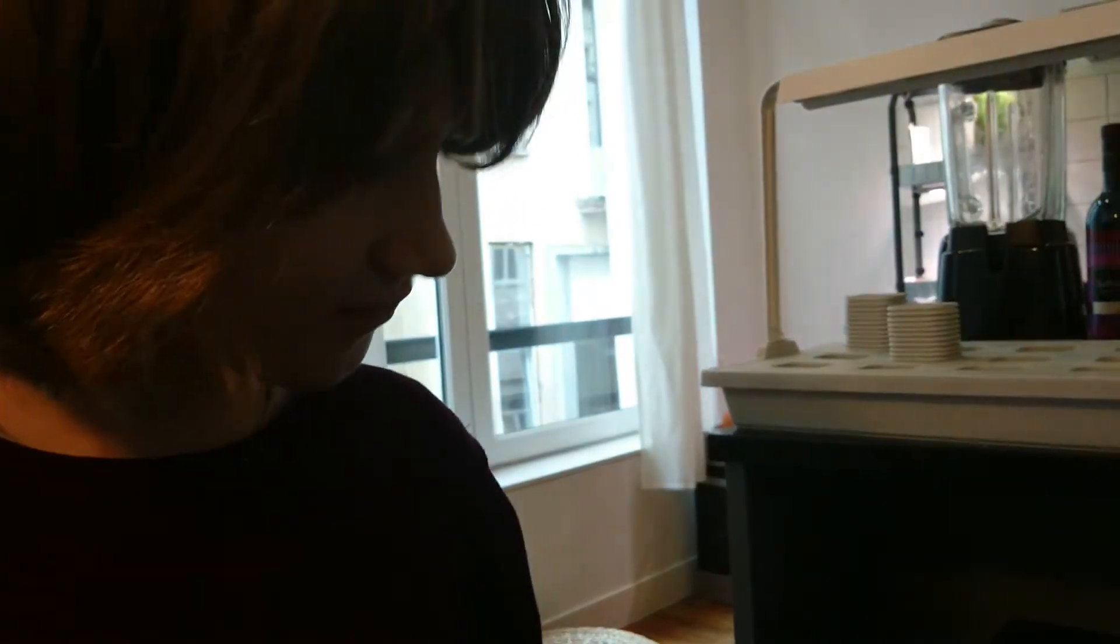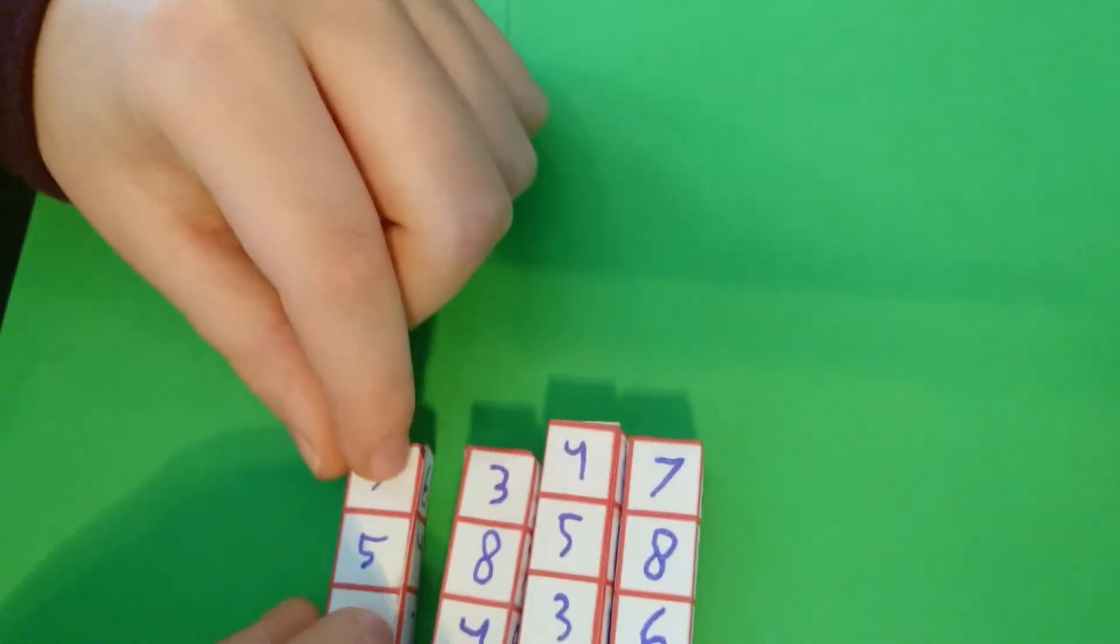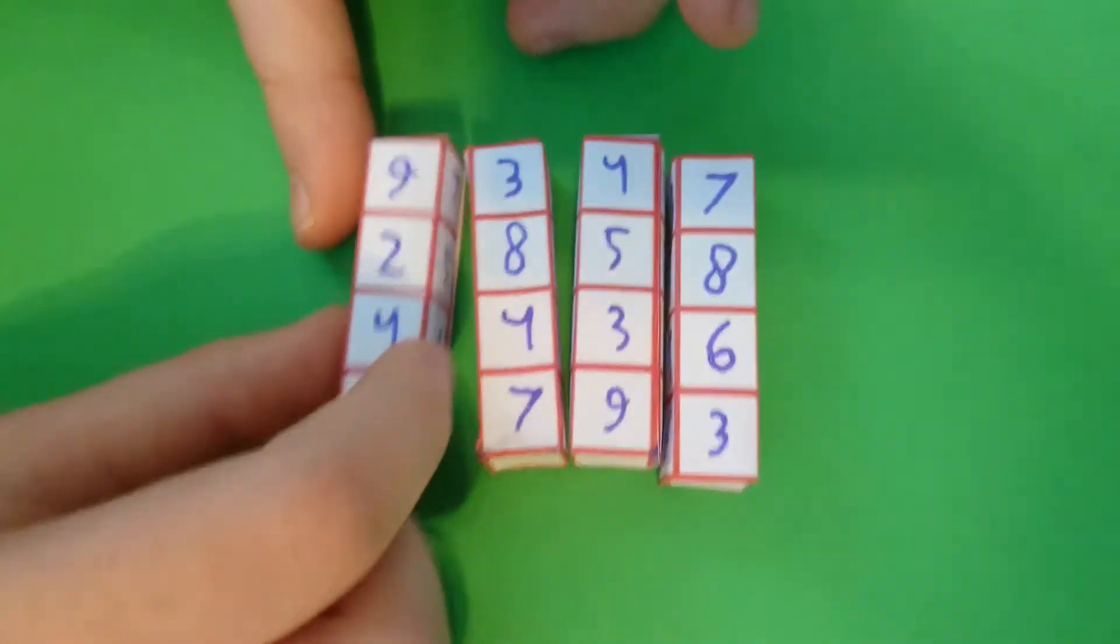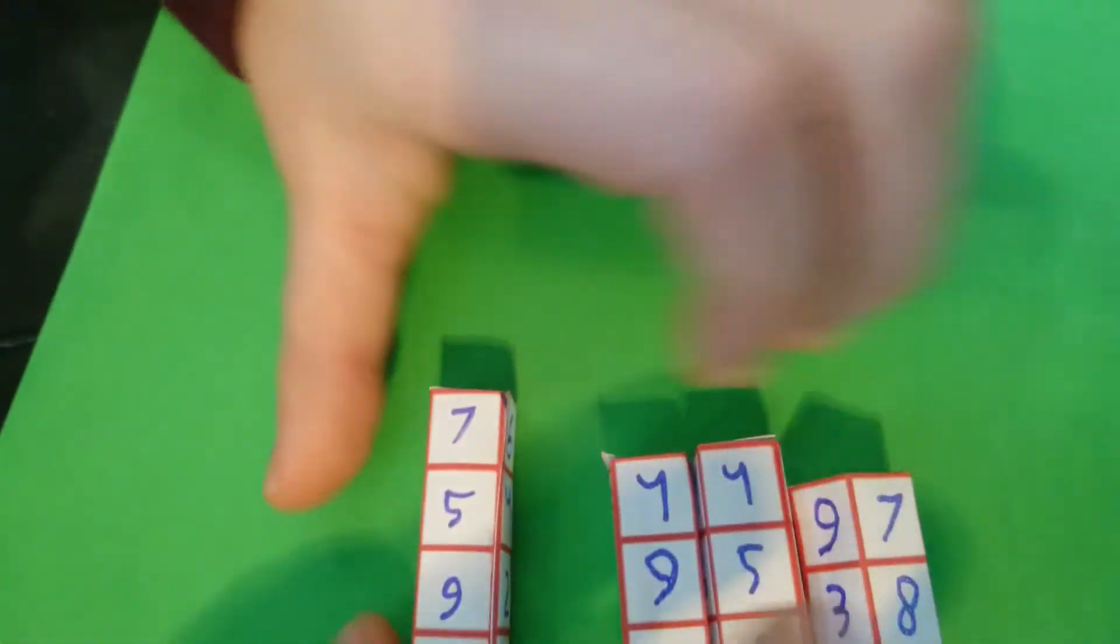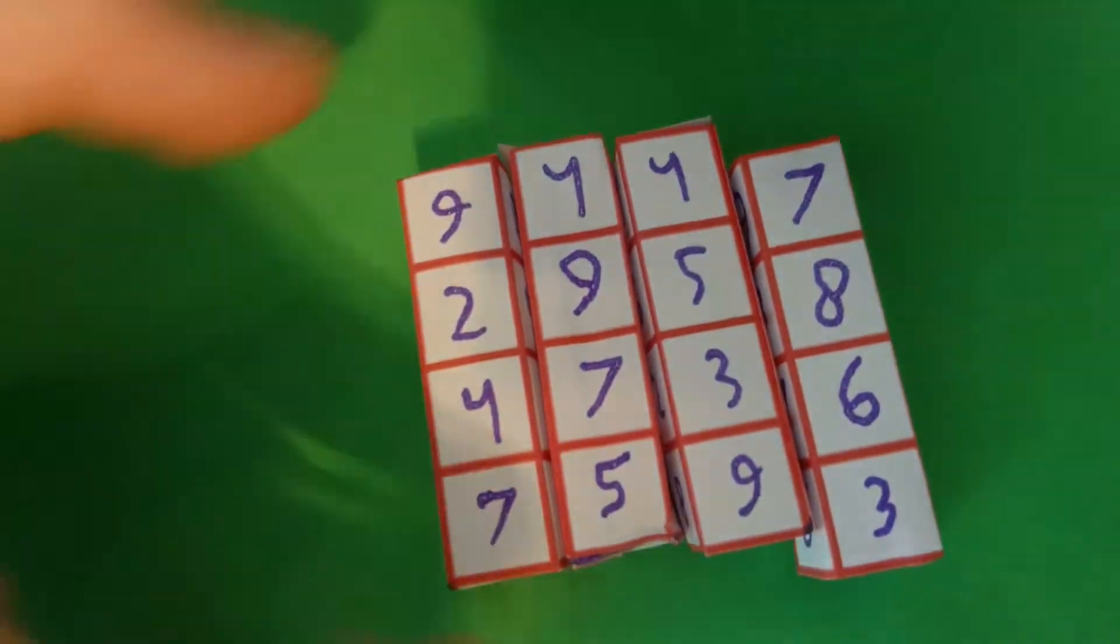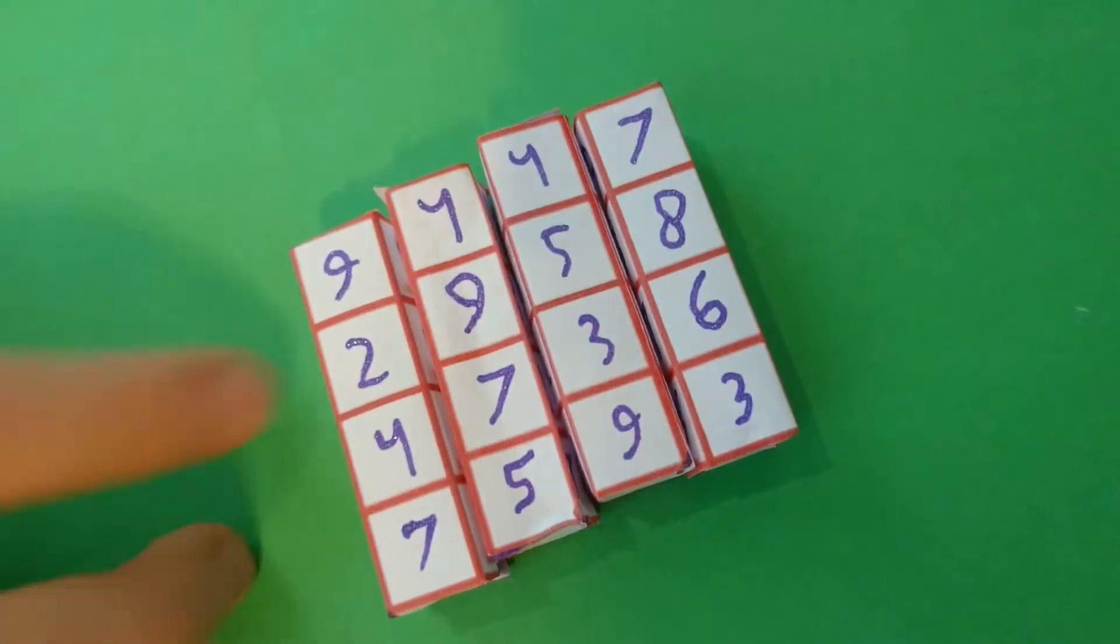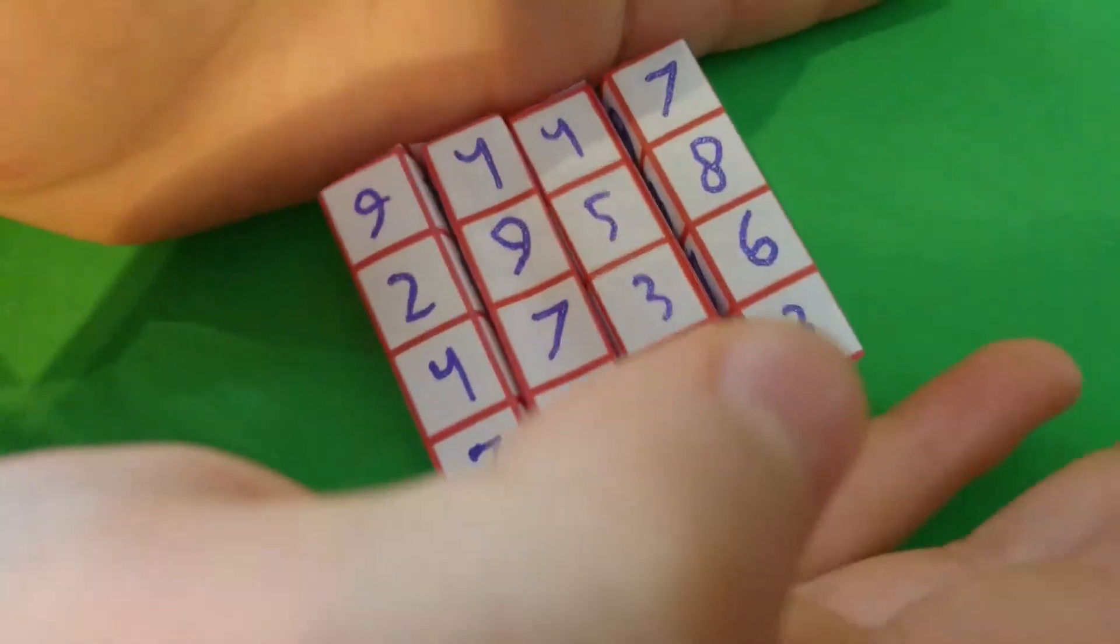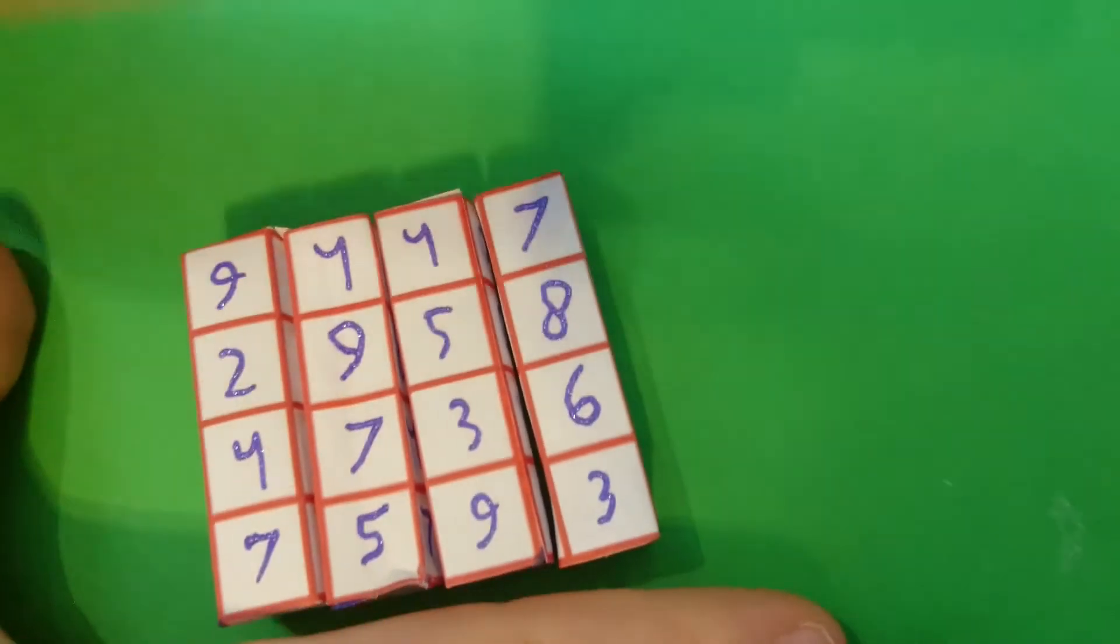So it doesn't really matter what the numbers on those sticks are, but they're written in a particular order. That's very important. It doesn't really matter, but there is a pattern. They've all got different numbers on each side - that's one of them.